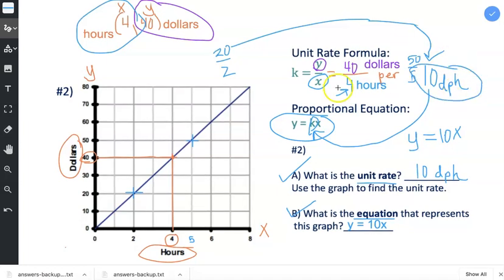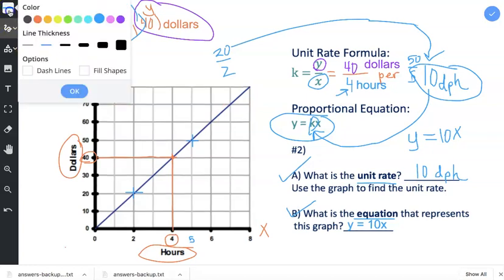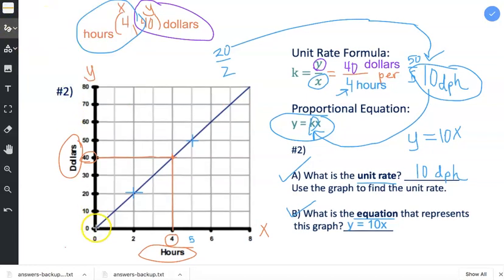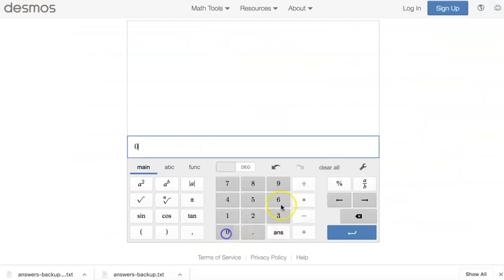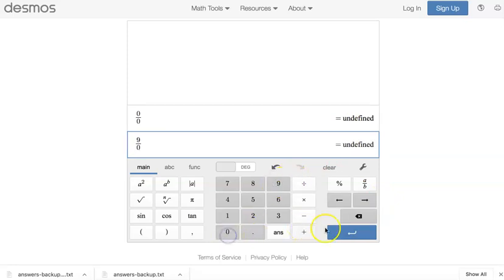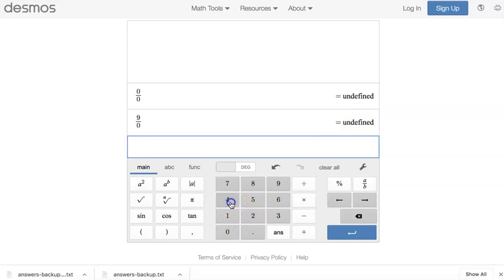The only point that you cannot choose, and I'm going to write this in a different color so that you remember, is (0, 0). And the reason is this: if you plug in (0, 0) into the formula, you're going to get undefined. Let me show you on a calculator. 0 divided by 0 is equal to undefined. In fact, if you have 0 in the denominator, look what happens: undefined. 4 divided by 0, undefined. 1800 divided by 0 gives you undefined.